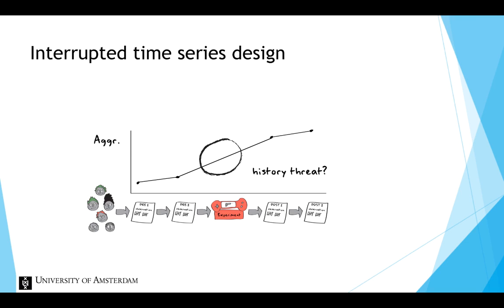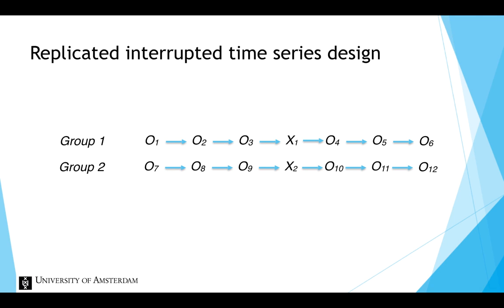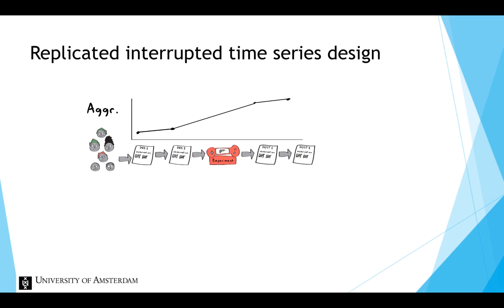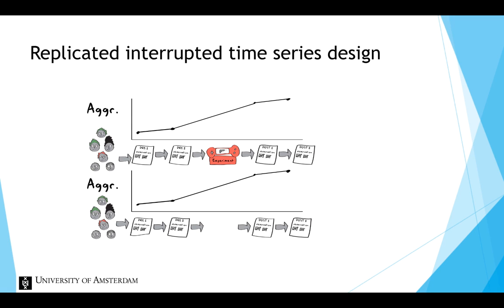One way to check whether there truly is not a history effect is to use a replicated interrupted time series design. This design adds a second group of participants for whom the dependent variable is measured at the same time point, but without any intervention. If we see the same pattern for the second group, there is probably a history threat present.